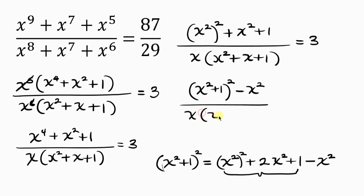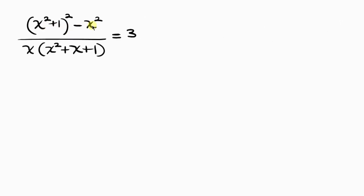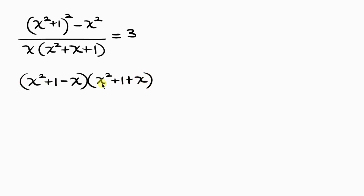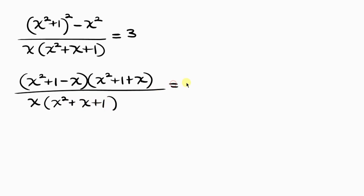The denominator is x times x squared plus x plus 1, equal to 3. Notice the numerator is now a difference of two squares — we have x squared plus 1 and x, both of which are perfect squares. Expressing this as a difference of squares: x squared plus 1 minus x, times x squared plus 1 plus x, all over x times x squared plus x plus 1, equals 3. Notice that x squared plus x plus 1 cancels, leaving x squared plus 1 minus x, all over x, equals 3.